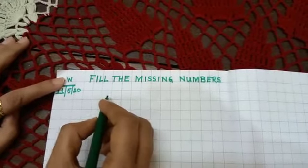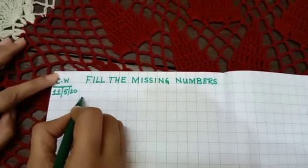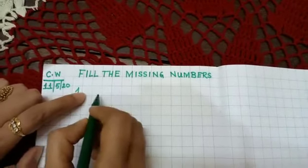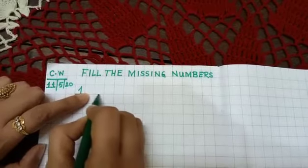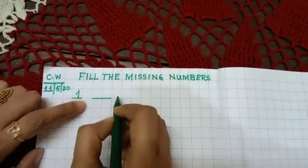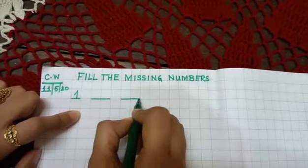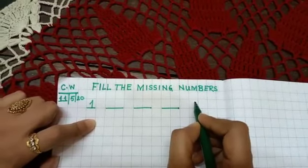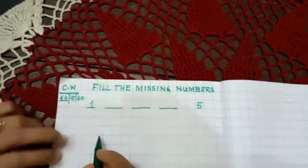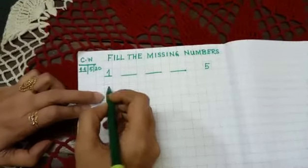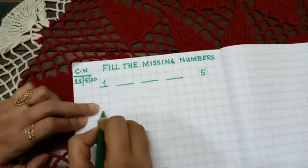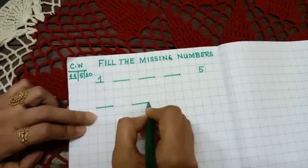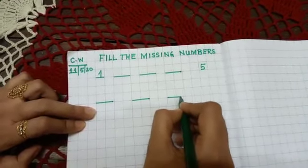Okay, now let's start. First you write 1 and leave one box and give dash, then again you leave one box then give dash. Again you leave one box then 5, right here 5. Then leave two boxes and here again dash, again leave the boxes and dash, again leave the boxes and dash, again leave the boxes dash, then 10.